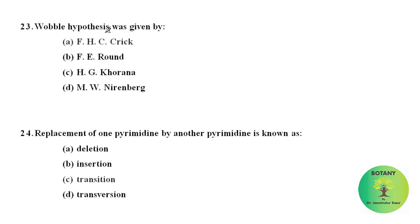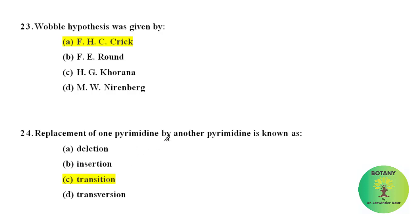The wobble hypothesis was given by F.H.C. Crick. The wobble hypothesis explains why multiple codons can code for a single amino acid. Replacement of one pyrimidine by another pyrimidine is known as transition.